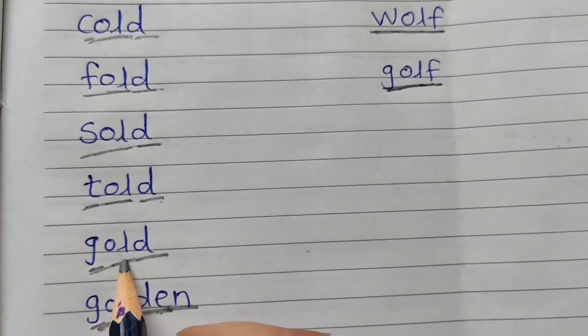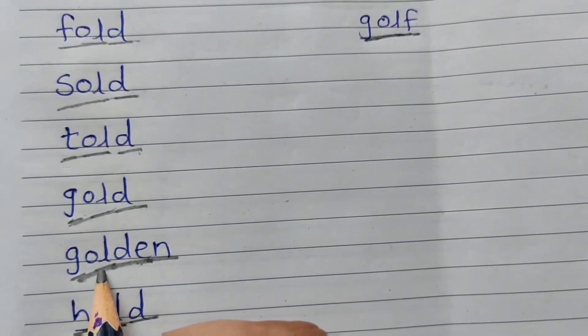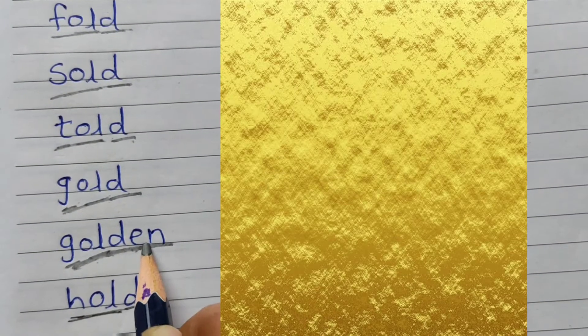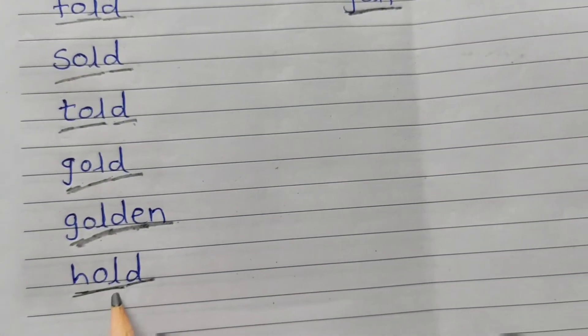Gold means sona. This is gold. Golden is a color. This is golden color. Hold means pakadana.